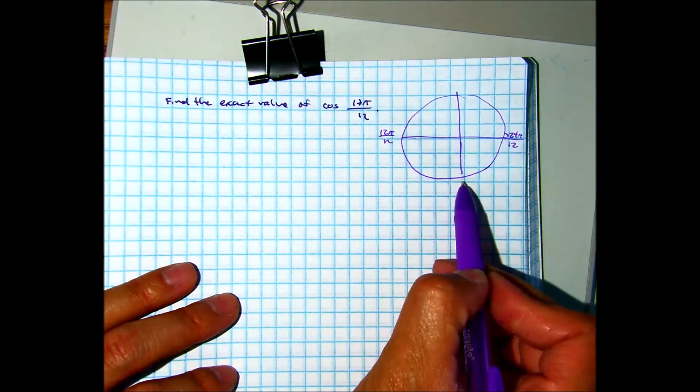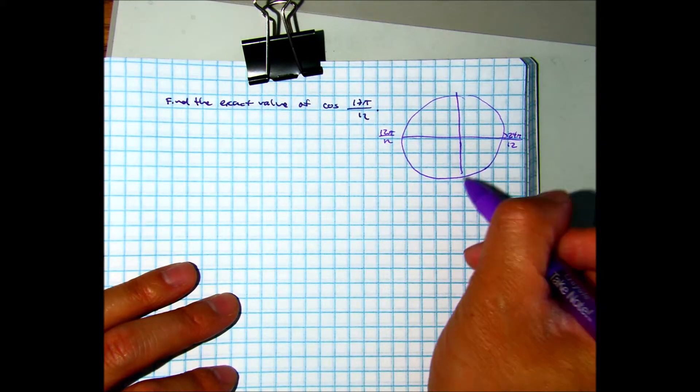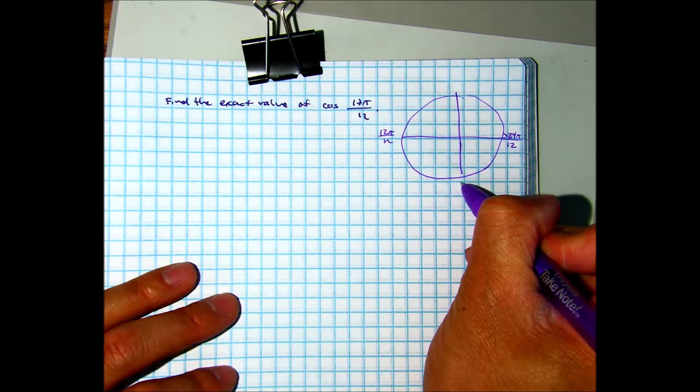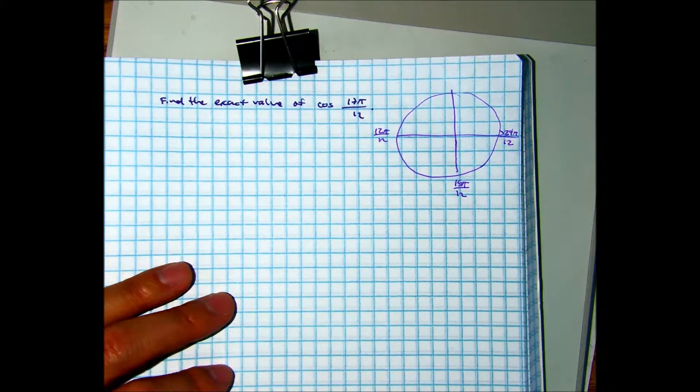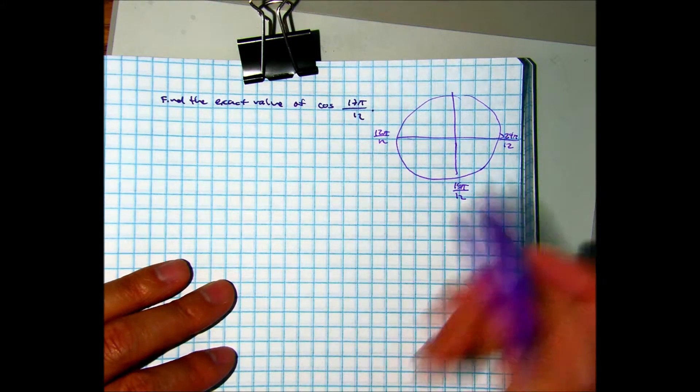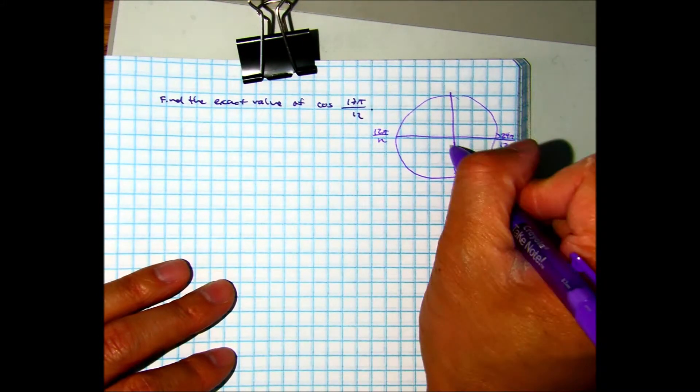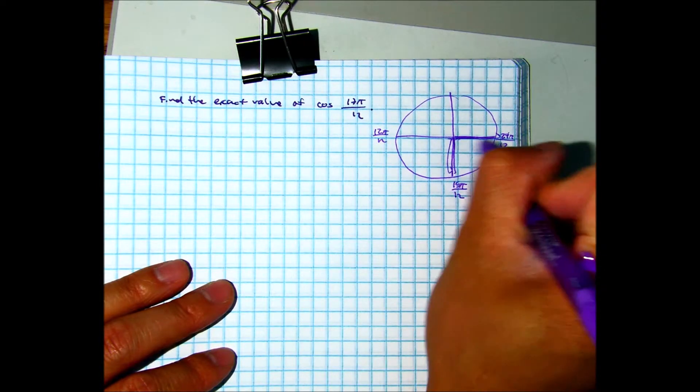So what's this one going to be? 18 pi over 12, because 18 pi over 12 reduces to what? 3 pi over 2. So I know that I'm here in quadrant 4. Does that make sense?